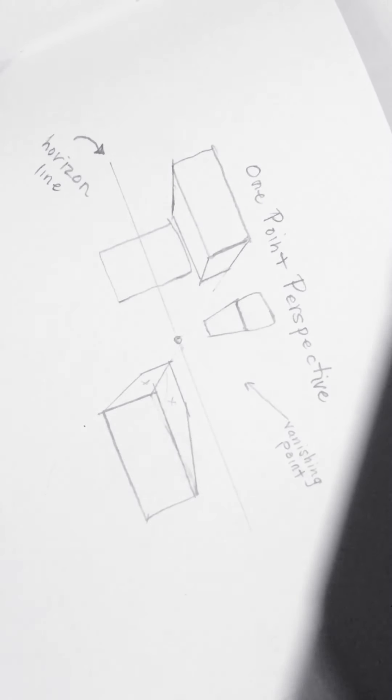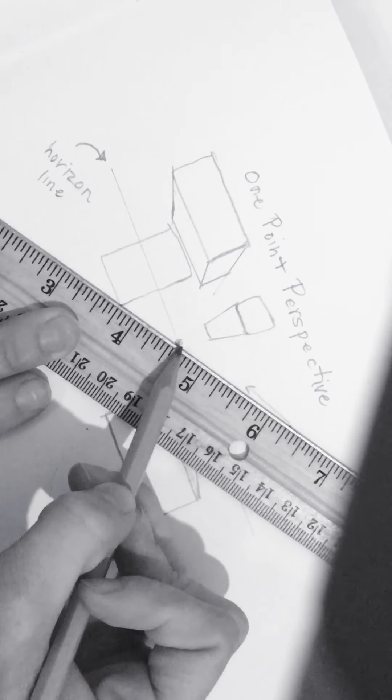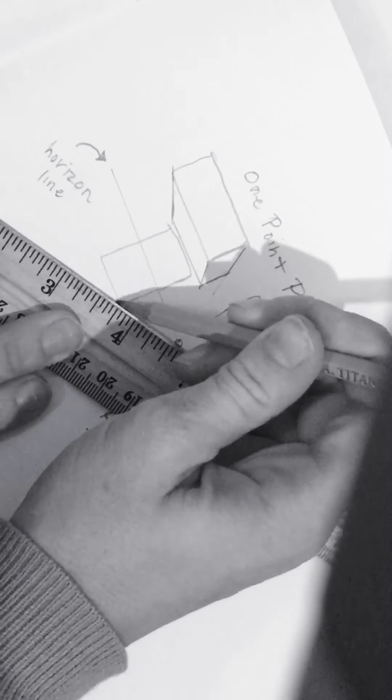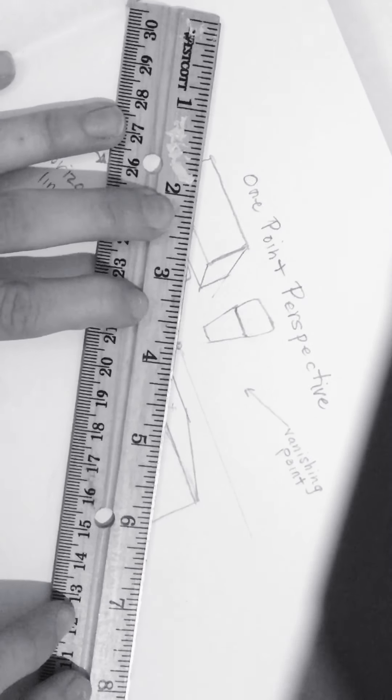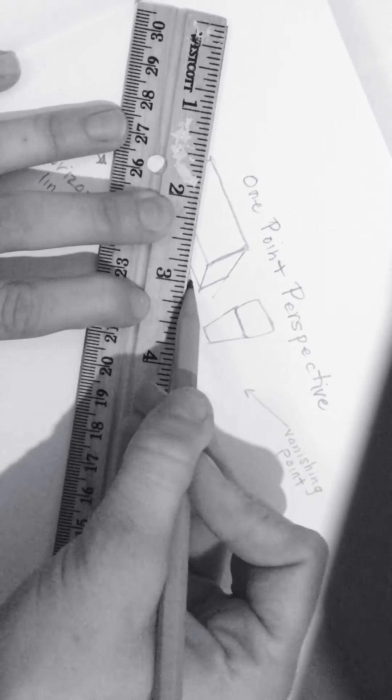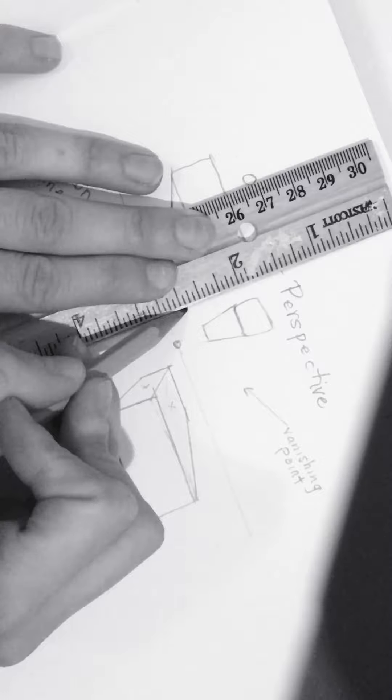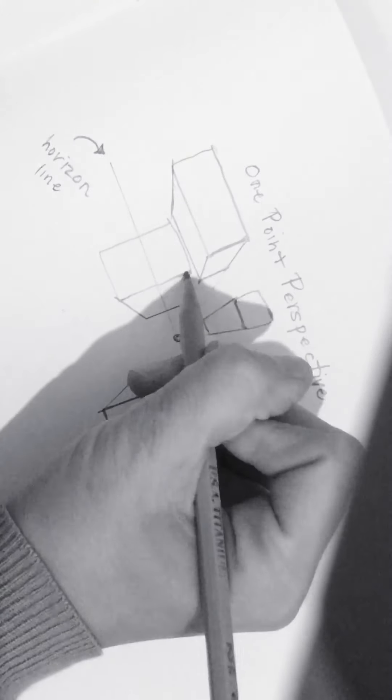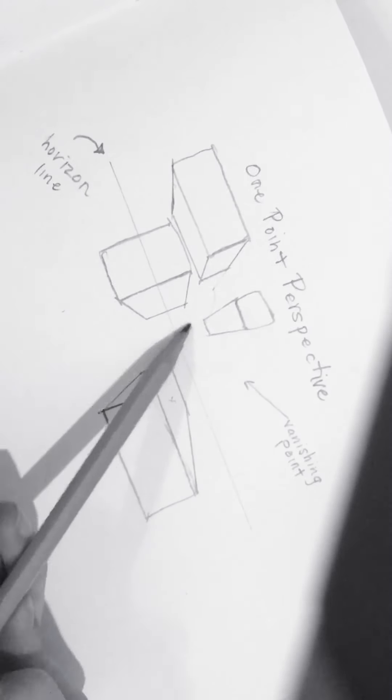So then on to my box that sits right on the horizon line. Doing the same method. I'm lining my ruler up to my vanishing point and to the corner of my box. And I'm choosing how long I want this to be. And then I'm just going to connect these. And just like that, I have all of these boxes that are exploding out of the center vanishing point.